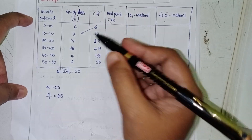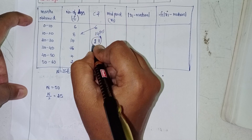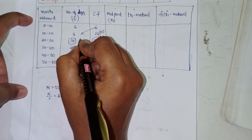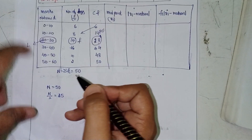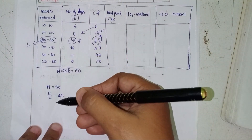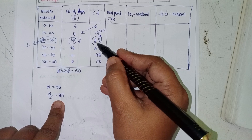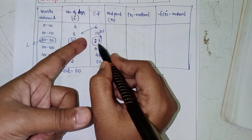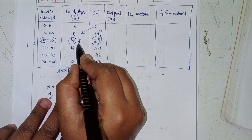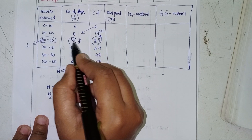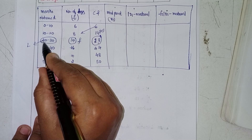The cumulative frequency just greater than 25 is 28. So the preceding cumulative frequency PCF is 14, the frequency f of the median class is 14. The lower limit of the median class interval 20-30 is 20, and the width i is 10.